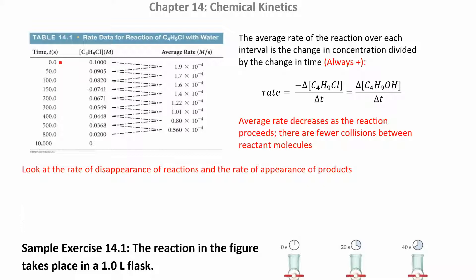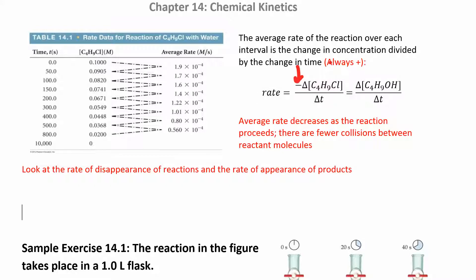At time zero, you start with a 0.1 molar concentration of your reactant. Then 50 seconds later, you can see it's going down, because reactants get used up over the course of the reaction. If you were measuring the products, that concentration would increase. The rate of the reaction is that change in concentration over the change in time. We include a negative sign because for a reactant, the change in concentration is always negative.